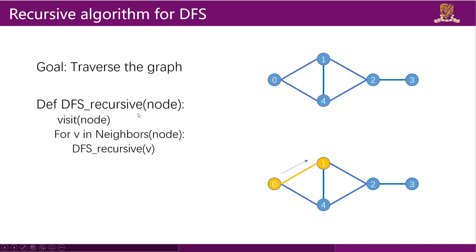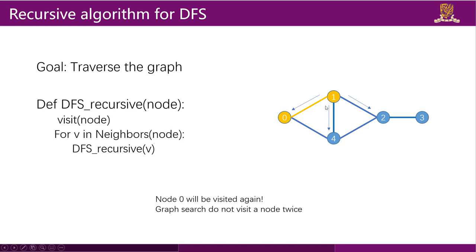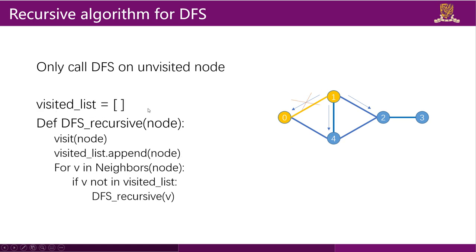This algorithm has a problem: in graph search we should not visit a node twice. Starting from node 0, which has children node 1 and node 4, we go to node 1, but node 0 is also a child of node 1, so we might visit node 0 again. To avoid this, we add a visited list — also called a closed list. We store nodes we already visited, and before applying DFS on a node we check if it is in the visited list.